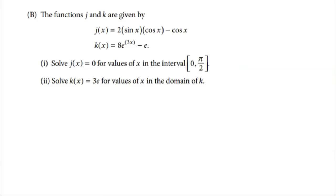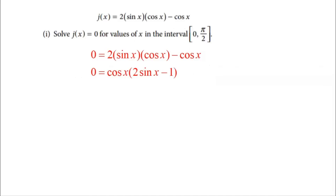Part B has two new functions J and K. The first part wants me to solve J of X equals zero on the interval zero to pi over two. The first thing I notice is that I can do some factoring — both terms, two sine cosine and negative cosine, have a cosine of X that I can factor out. Two sine cosine divided by the factored cosine gives two sine, and negative cosine divided by cosine gives negative one. So I get cosine of X times quantity two sine of X minus one.